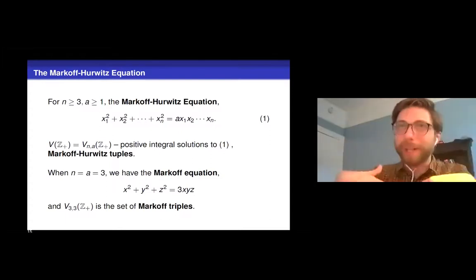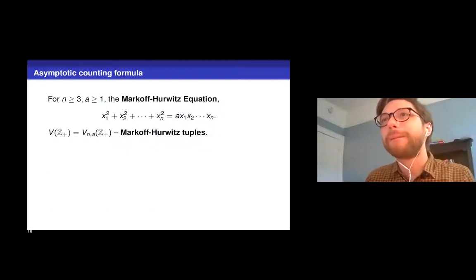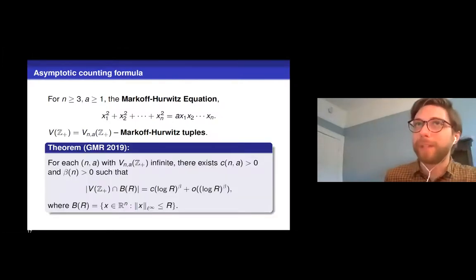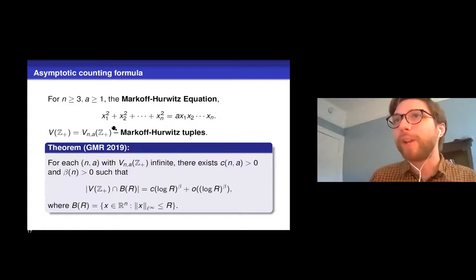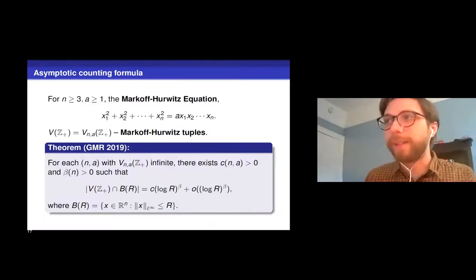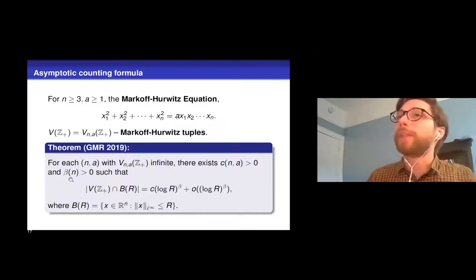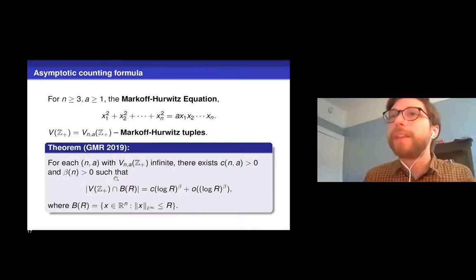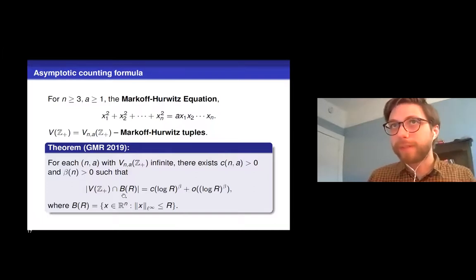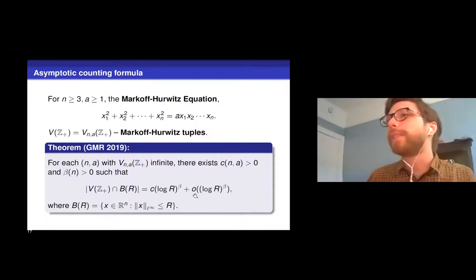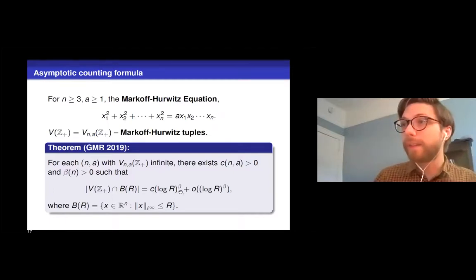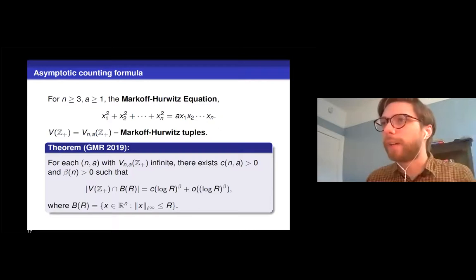When n and a are both three, this just reduces back to the Markoff equation. And this is the main result that I'll be talking about today. So again, this is joint work with Gamburd and McGee. So what does this result say? It says, if we are in a situation where this equation has infinitely many positive integral solutions, then there's some constant, the constant depends on both n and a, and some other constant beta, which only depends on n, such that the number of positive integral solutions in a ball of radius r with respect to the L∞ norm is approximately that constant c times log r to the beta plus some little o log r to the beta term.